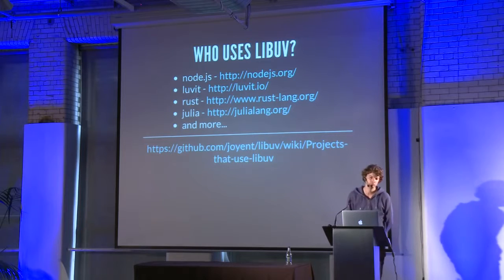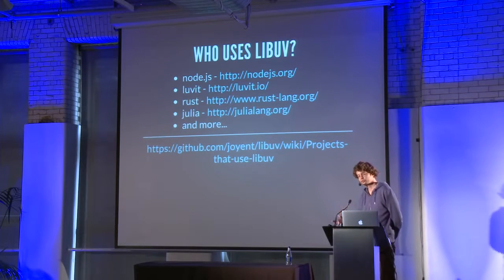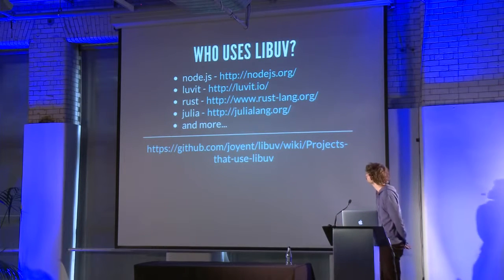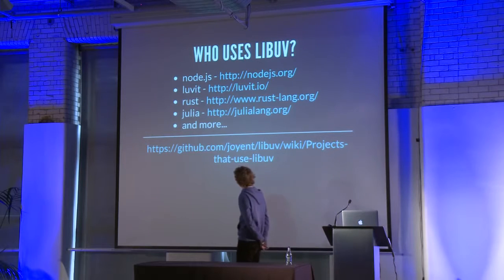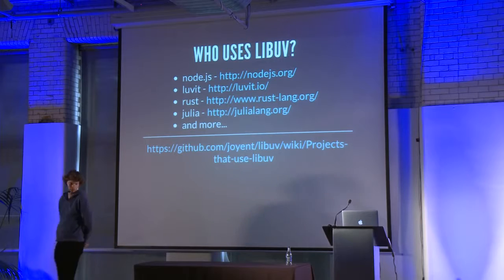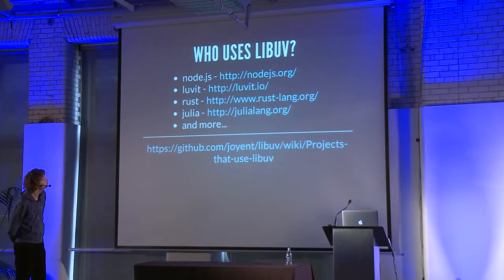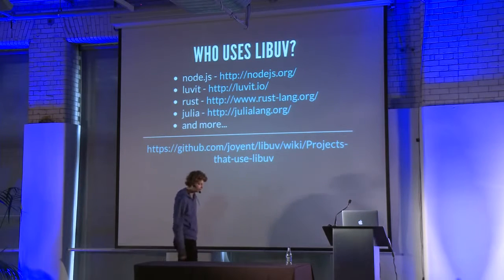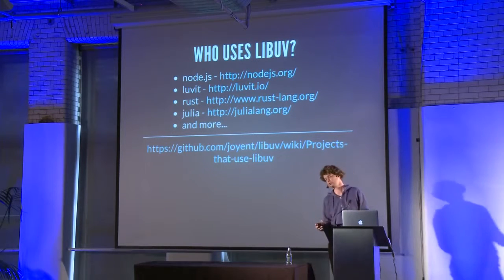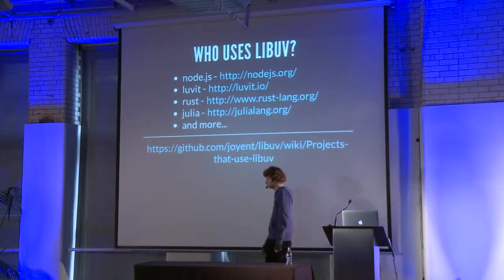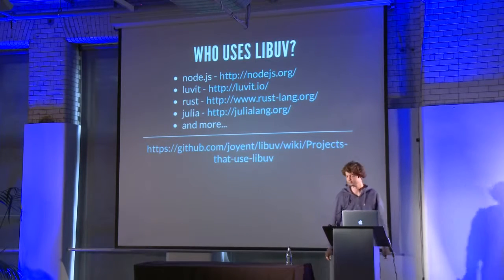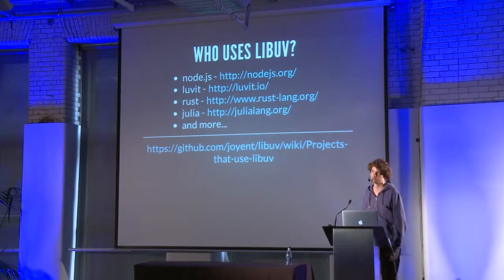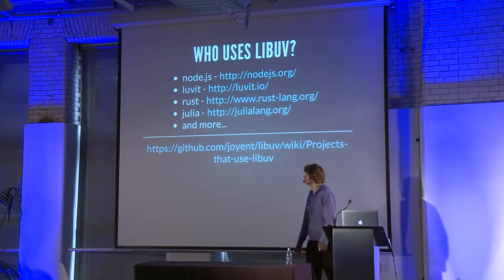Yet another project is Rust, the language developed by Mozilla. It aims to be a kind of functional programming language that is also a system programming language, and the Rust guys are doing some quite innovative stuff — if you're into programming language design, I would urge you to check it out. Yet another language that uses LibUV in its core library is Julia, which operates in the technical computing space and is in some respects a competitor to R. The main aim of Julia is to provide a high-level language that still has high performance.